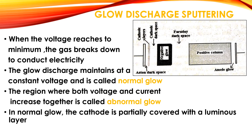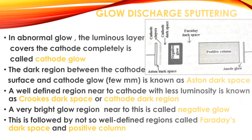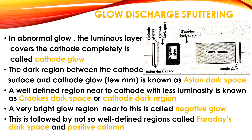In glow discharge, when the voltage reaches a minimum, the gas breaks down to conduct electricity. The glow discharge then maintains at a constant voltage, called normal glow. There is also a region where both voltage and current increase together, called abnormal glow. In normal glow, the cathode is partially covered with a luminous layer. In abnormal glow, the luminous layer covers the cathode completely — this is called cathode glow.